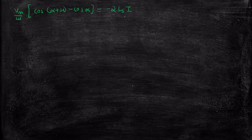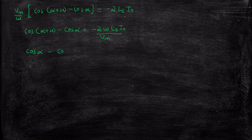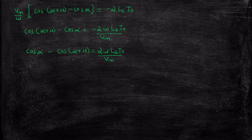Minus 2 times Ls times Iout — subtracting minus Iout from plus Iout gives minus 2 Iout as the limits. So we get: cos(alpha plus mu) minus cos(alpha) = minus 2 * omega * Ls * Iout / Vm. Taking Vm to one side and omega to the other, this can be rewritten as cos(alpha plus mu) = cos(alpha) minus 2 * omega * Ls * Iout / Vm. So we arrive at this particular expression — this is equation number two.